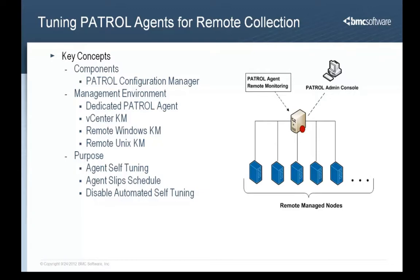The purpose discussed in the first video applies here as well. Out of the box, the patrol agent is configured to automatically scale back data collection when its work rate exceeds a certain threshold. This is to ensure the agent does not consume excessive resources when other processes such as application code and database applications on the managed node need those resources. These out-of-the-box settings are proper configuration for most implementations where the agent is installed locally on the managed node. However, this does not make sense for nodes that are dedicated to patrol agents used for remote data collection. If an agent doing remote data collection is left with the default settings, the agent will most likely slip its data collection schedule and data points will be missed.